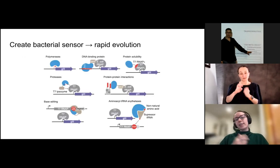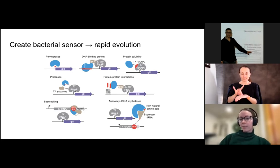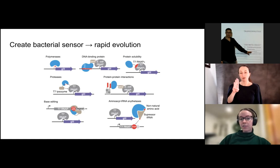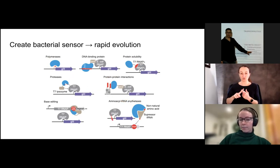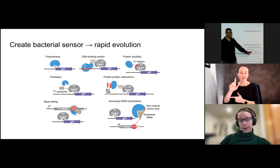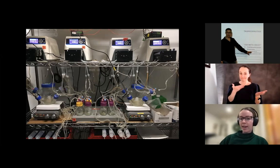You can apply this technique to anything for which you can engineer a sensor in bacteria. This is a small sampling of things people have used PACE to evolve — most from David Liu's lab at the Broad. People have evolved everything from protein solubility to polymerase promoter binding, to base editors, to aminoacyl tRNA synthetases charging tRNAs with new amino acids.